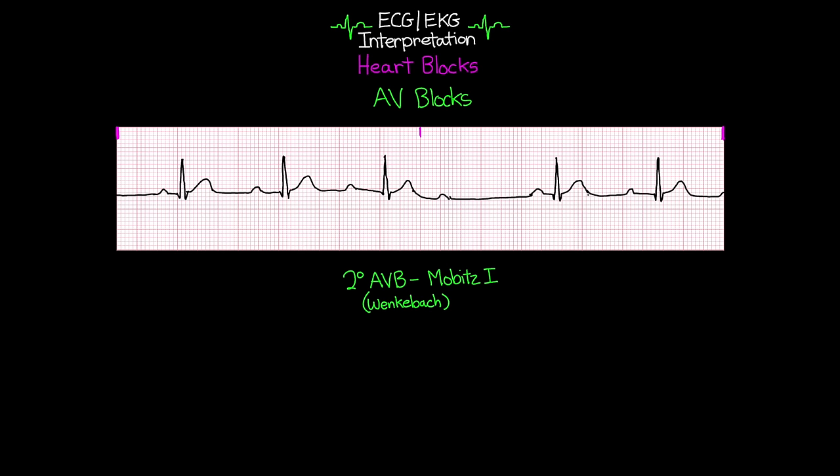Using the husband-and-wife analogy: in a Wenckebach, the husband first comes home on time, then a little later, then a little later, until finally one night he just doesn't come home — just like the PR interval gets longer and longer until it drops. A helpful mnemonic a friend taught me in nursing school: 'longer, longer, longer, drop — then you have a Wenckebach.' It has a nice ring to it and should help you remember that when you see this pattern, it's a Wenckebach or Mobitz I.